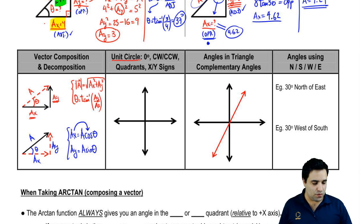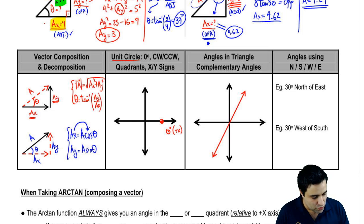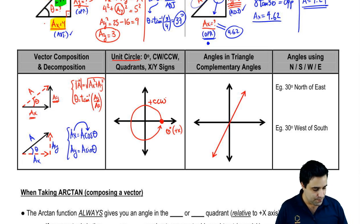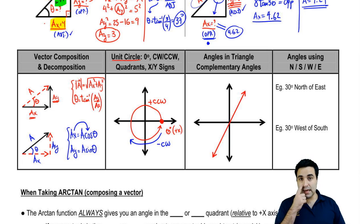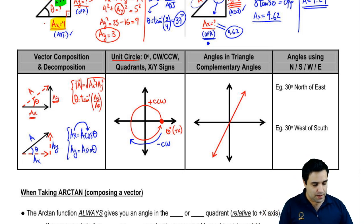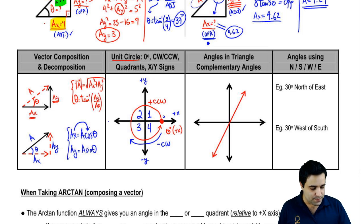Unit circle — remember this from trig. Zero degrees is at the positive x-axis, and the unit circle goes counterclockwise in the positive direction. Clockwise is the negative direction — one way to remember is that the clock runs backwards from the unit circle. Quadrants: starting from zero going counterclockwise, we have first, second, third, and fourth quadrants. The positive y-axis is at 90°, negative y-axis at 270°, positive x-axis at 0°, and negative x-axis at 180°.